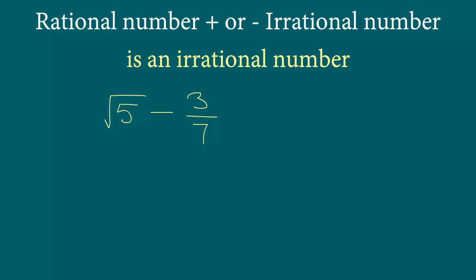Again using the method of contradiction, we are going to assume that this is actually a rational number and it can be written in the form a/b, where a and b are integers, b is not equal to 0, and they are co-prime — meaning they do not have any common factors.